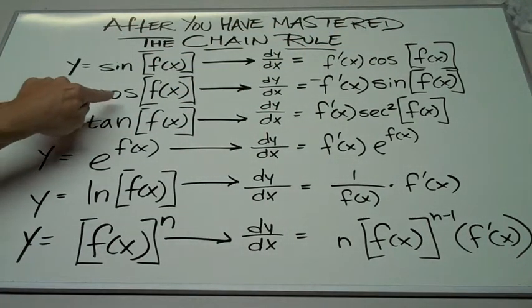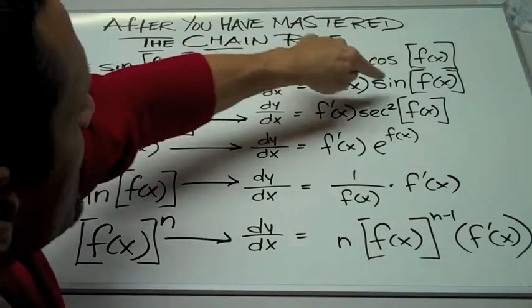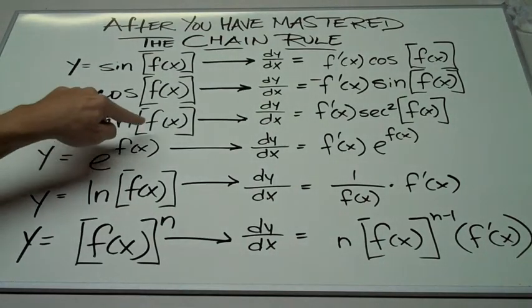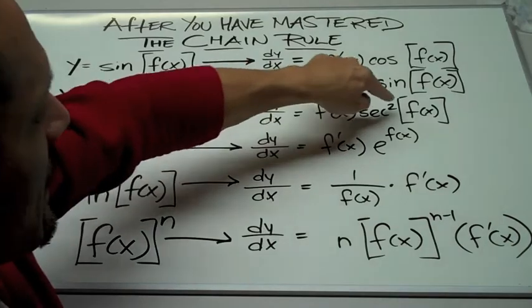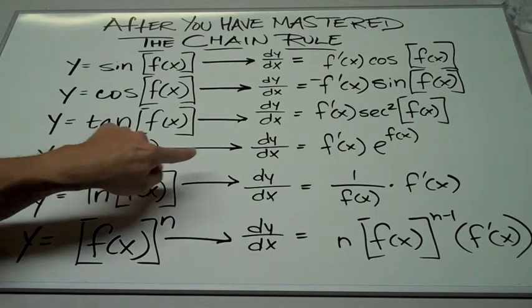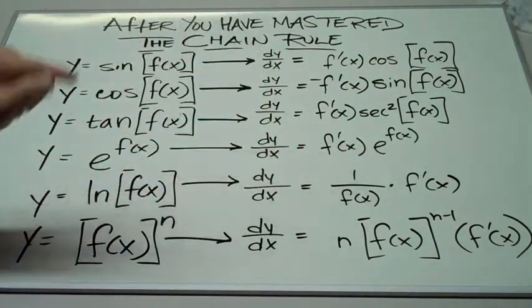If y is equal to cosine f of x, then dy dx equals negative sine f of x times f dash of x. If y is equal to tangent f of x, then dy dx is equal to secant squared f of x times f dash of x. If y is equal to e to the f of x, then dy dx is equal to e to the f of x times f dash of x.